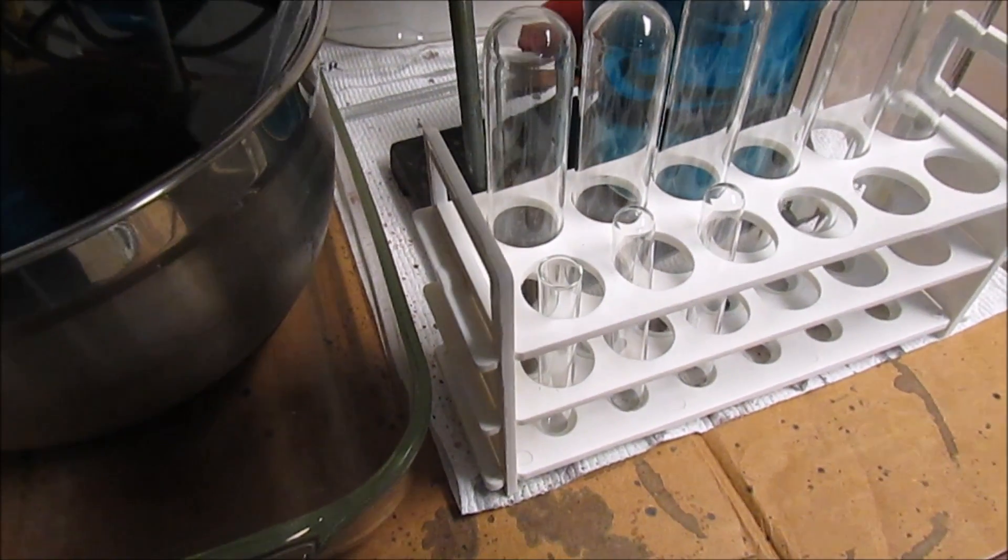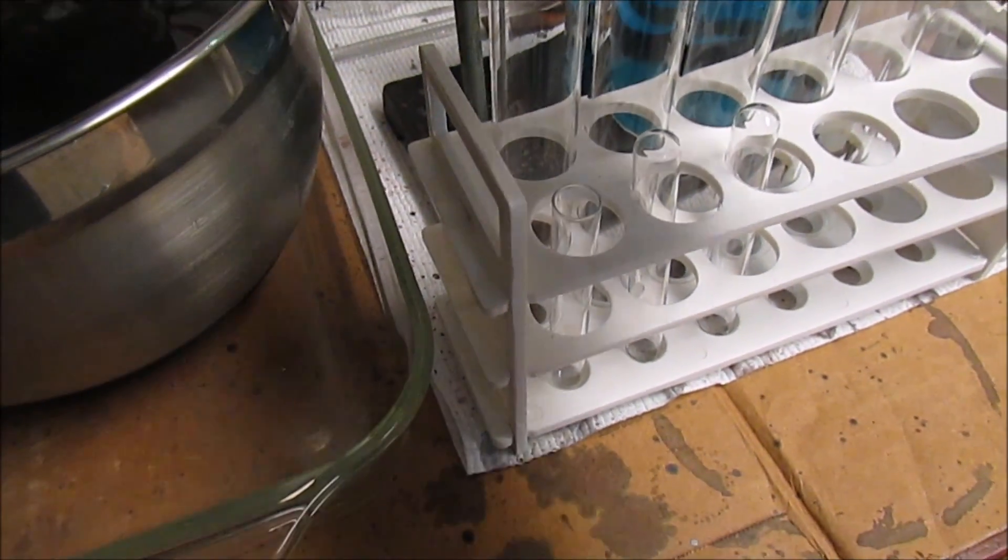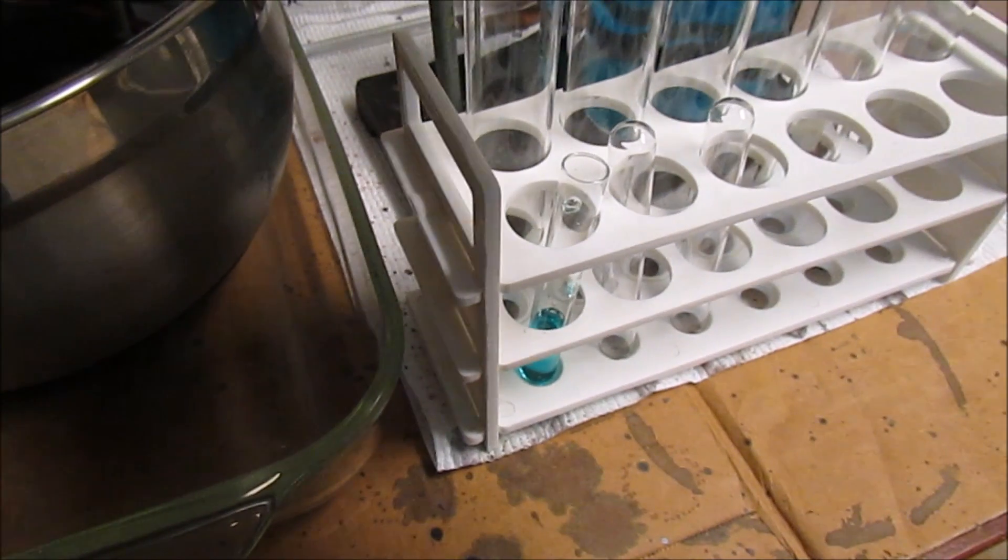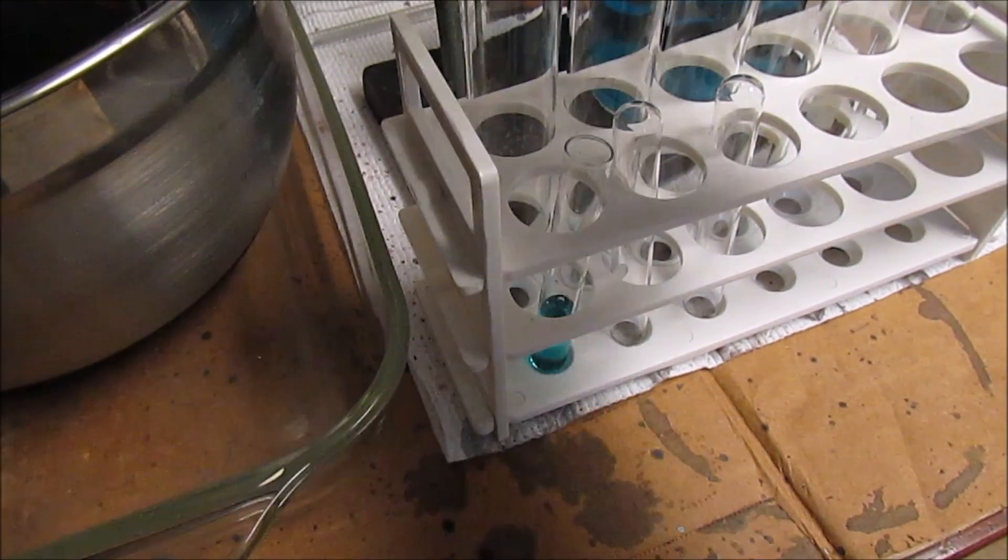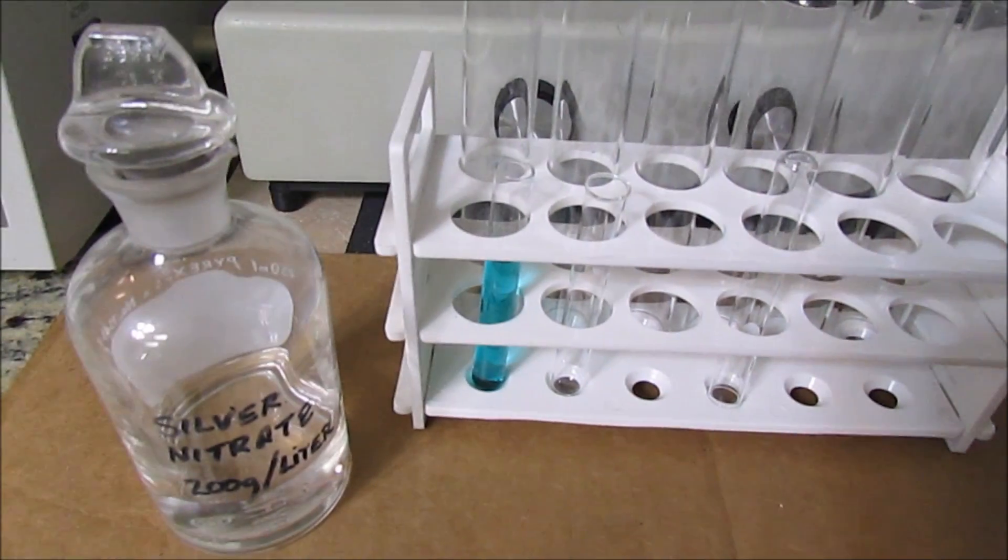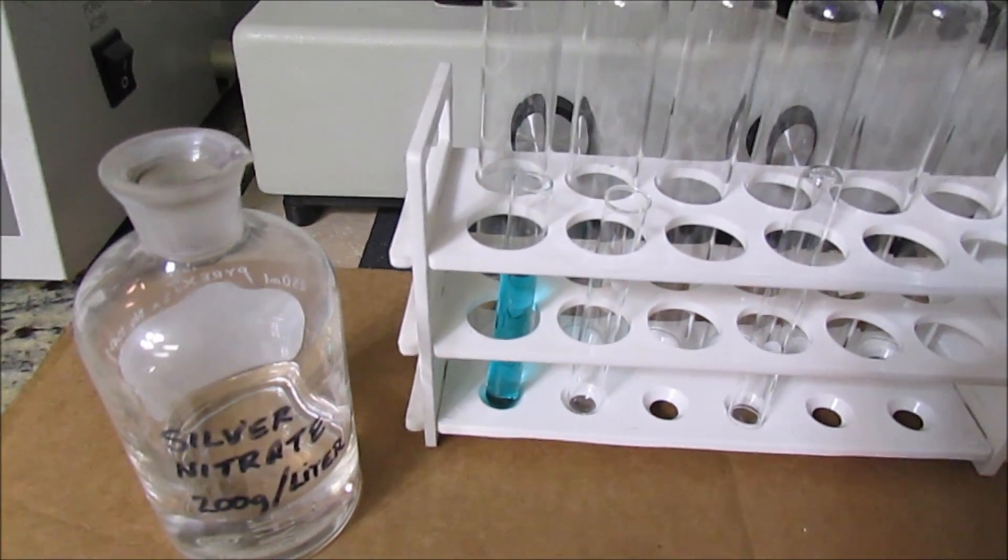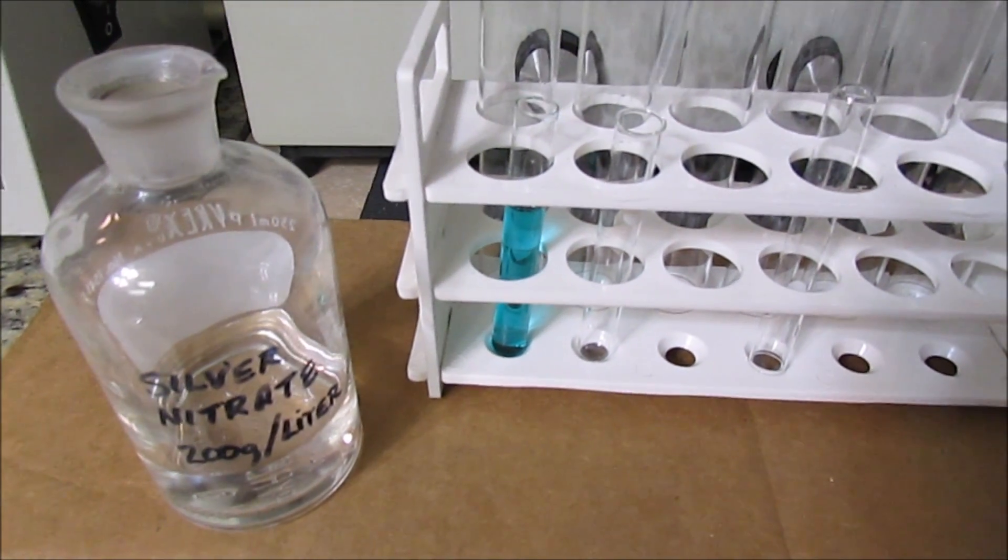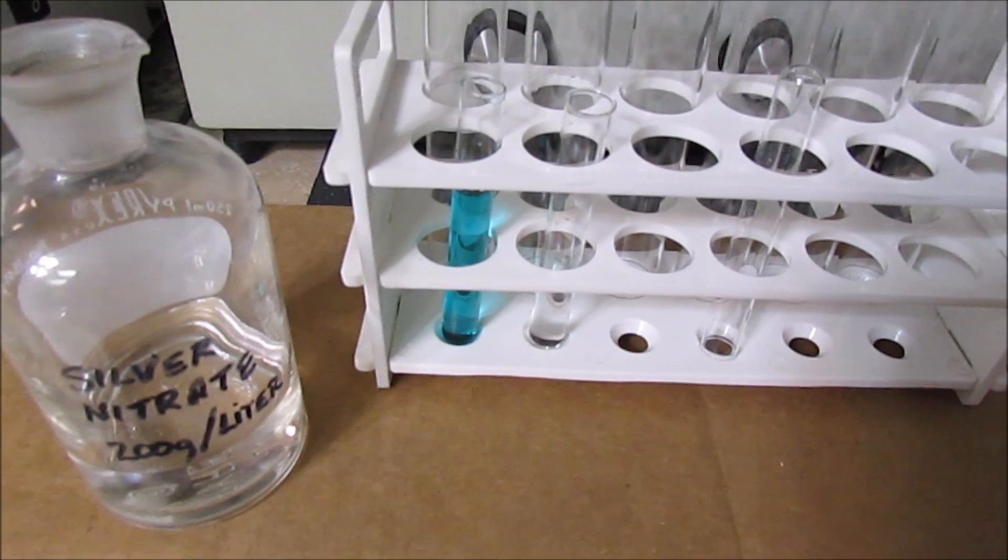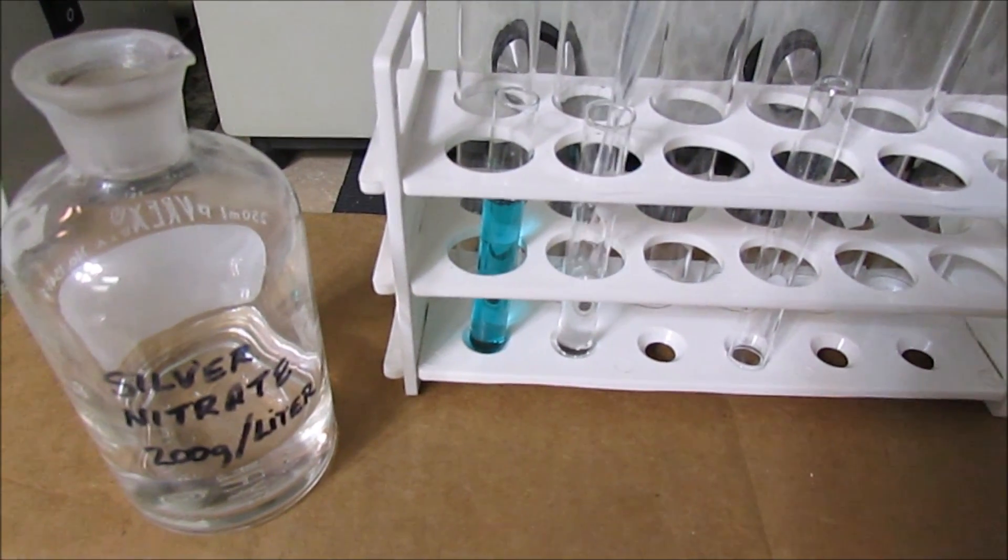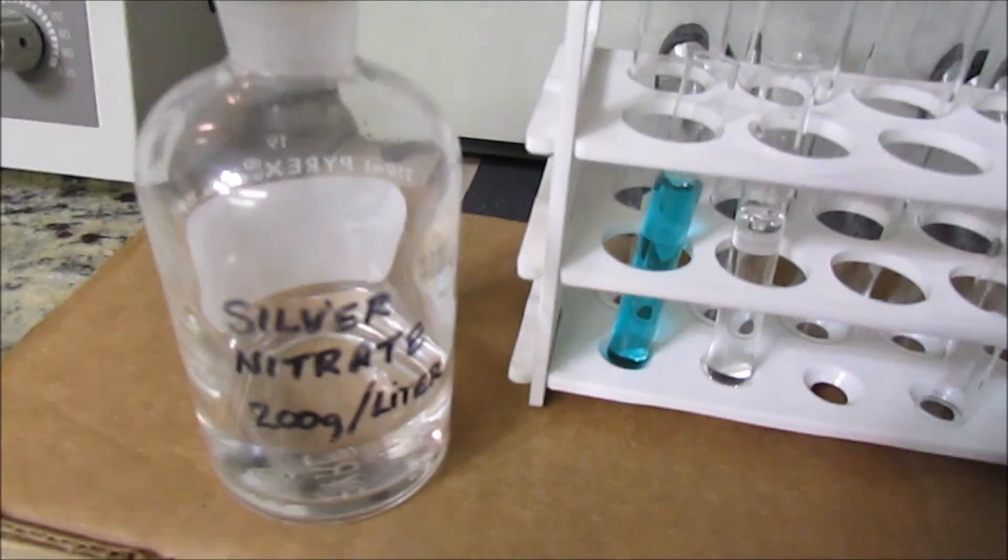I'll draw a sample up out of my electrolyte that I want to test and fill one of my little tubes here. Now I'll draw a sample of silver nitrate solution to use for the blank. This is 200 grams per liter.